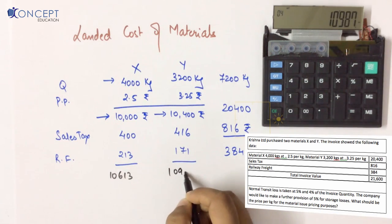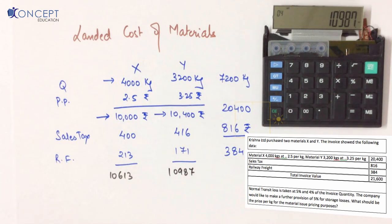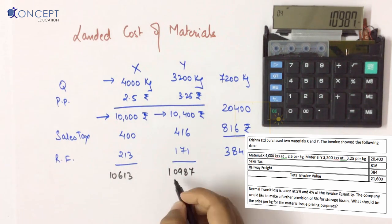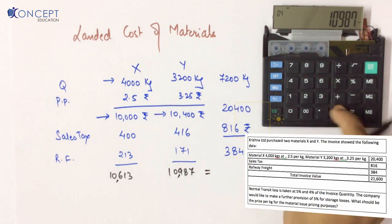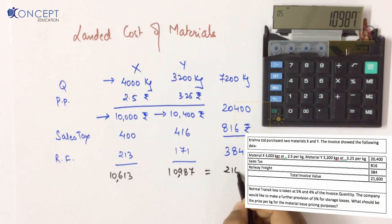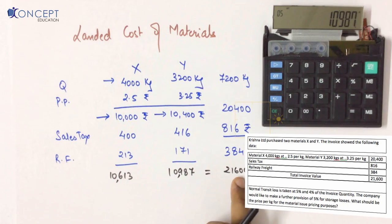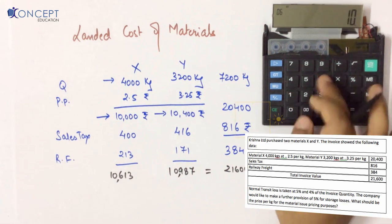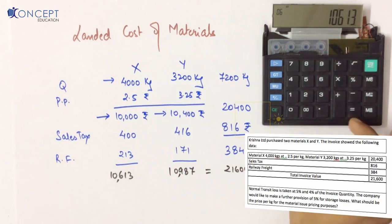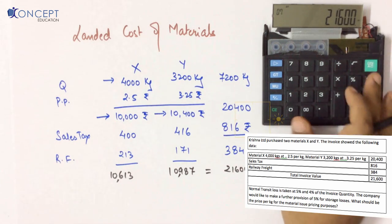Now I have the cost for both materials. For checking purposes, the total of both costs should equal 21,600, since that was the base figure we were apportioning. Verification: 10,613 + 10,987 = 21,600. Our answer is correct.